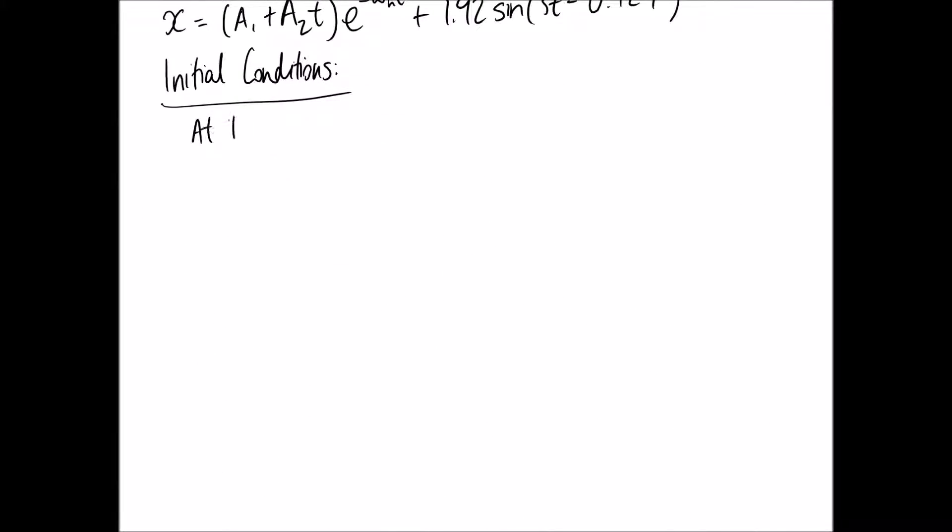So we know that at time equals zero, when our system is released, x is equal to 0.6 meters. And it's to the right, which is the positive direction as we've defined it. And again, at the release point, we know the velocity, and that was 2 meters per second. Again to the right, so it's going to be a positive 2 in here as well.